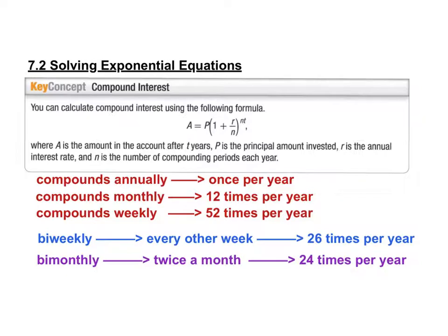What about semi-annually? The prefix 'semi' means half, like a semi-annual sale happening twice a year. So semi-annually means 2 times per year, and N equals 2. Then there's quarterly — how many times a year? Four times, because there are four quarters. So quarterly means every three months, N equals 4. These are phrases you need to know because you'll encounter them in your homework.